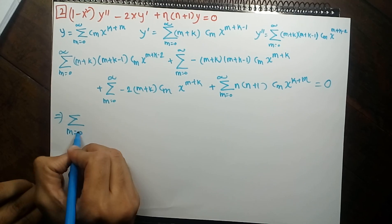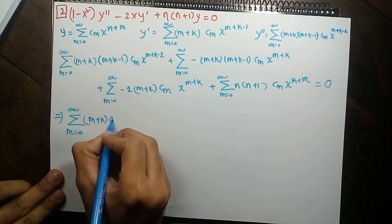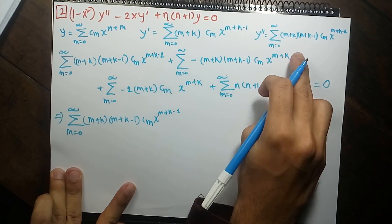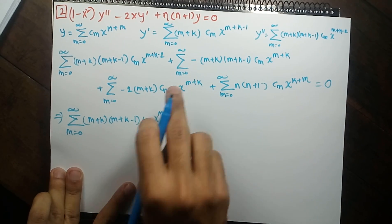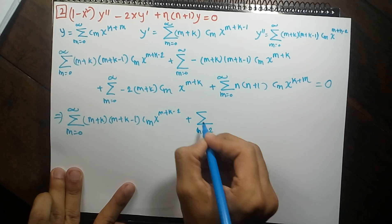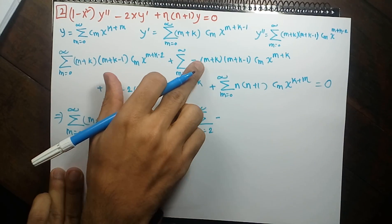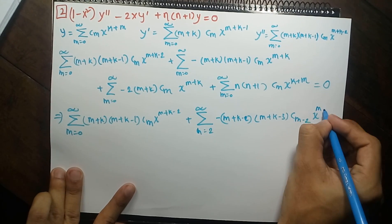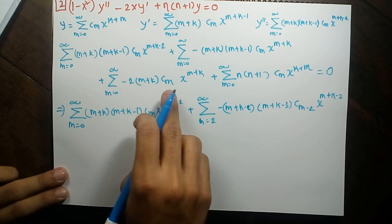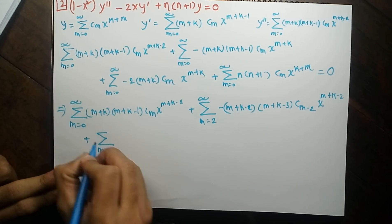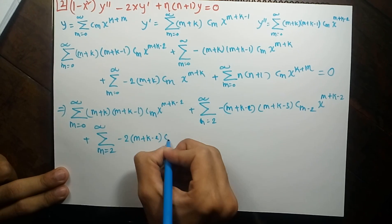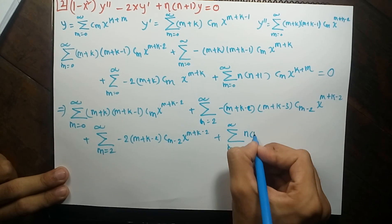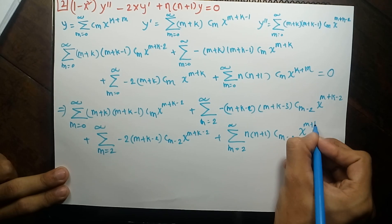Rewriting: the first term stays as is. For the second term I substitute m as m−2, so the summation starts from m equals 2, giving (m+k−2)(m+k−3) c_{m−2} x^(m+k−2). Similarly the third term becomes minus 2(m+k−2) c_{m−2} x^(m+k−2), and the fourth term with n(n+1) gives n(n+1) c_{m−2} x^(m+k−2). All equal to zero.